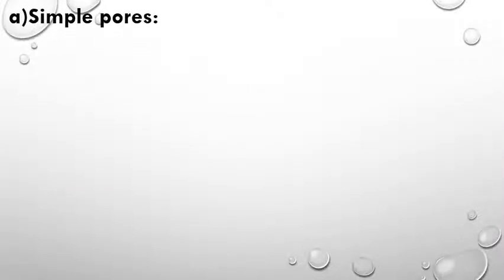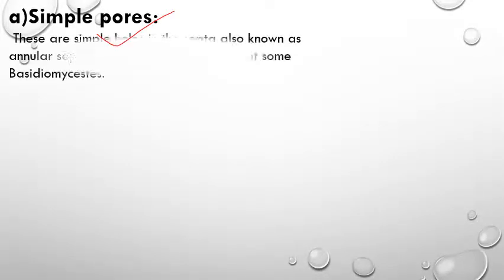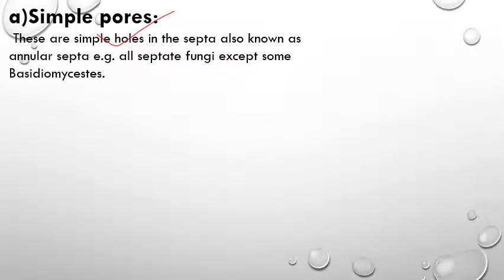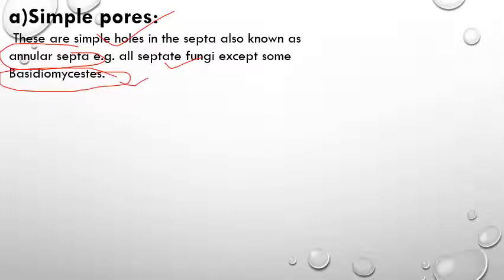Pores are of two types. The first is simple pores — these are simple holes in the septa, known as annular septa. These are found in all septate fungi except some Basidiomycetes.